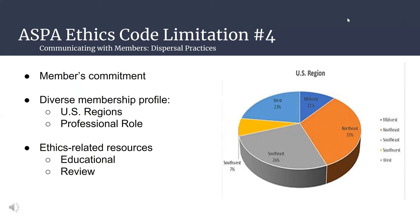Any individual who joins ASPA is making a commitment to serve the public interest by adhering to the code of ethics. Given ASPA's national reach, members are able to join one of over 30 regional chapters, as well as choosing between over 30 topic-based sections. Membership is offered to individuals who identify as students, public administrators, academics, or any other interested parties. Ultimately, as Erica mentioned, it is the responsibility of the individual to adhere to the code. ASPA provides various educational review resources to support members' efforts, the majority of which are accessible online.